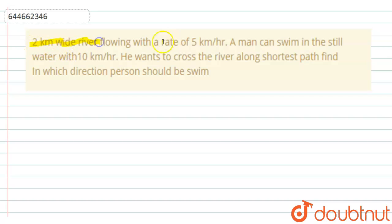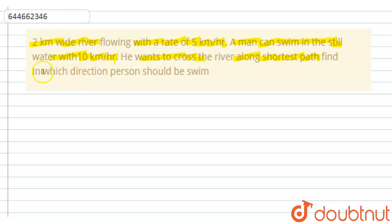The given question: a two kilometer wide river is flowing at a rate of five kilometers per hour. A man can swim in still water at 10 kilometers per hour. He wants to cross the river along the shortest path. We need to find in which direction the person should be swimming. Let me draw the figure first.